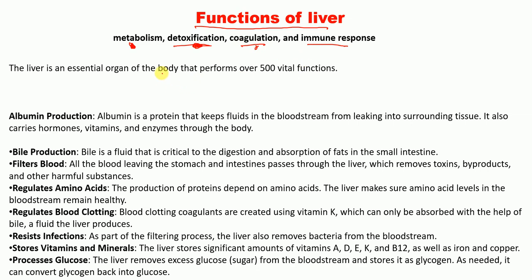The liver is an essential organ that performs over 500 vital functions. One function is albumin production. Albumin is a protein that keeps fluids in the bloodstream from leaking into surrounding tissue and carries hormones, vitamins, and enzymes through the body.